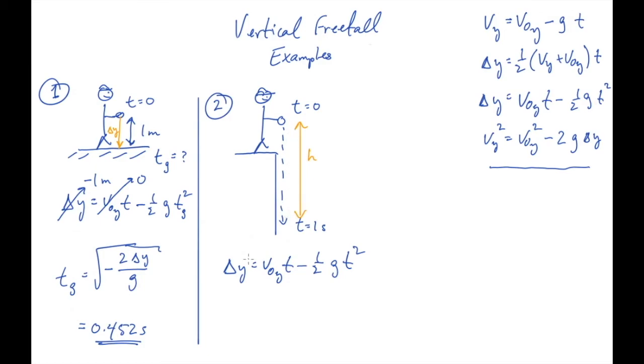And h is how far it has fallen. So delta y, the displacement, is minus h. It is going to go down some height h that we want to find. That minus sign is there because the displacement vector is down, this way.